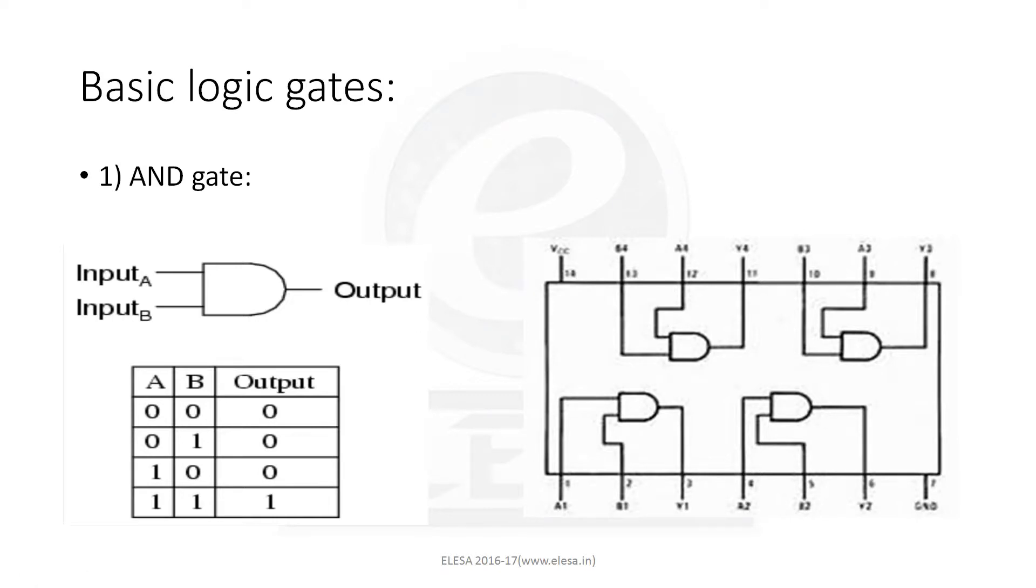Actually, a gate is an IC, that is integrated circuit. The IC number for AND gate is 7408. This IC contains four 2-input AND gates. The practical connection for this IC is shown here.